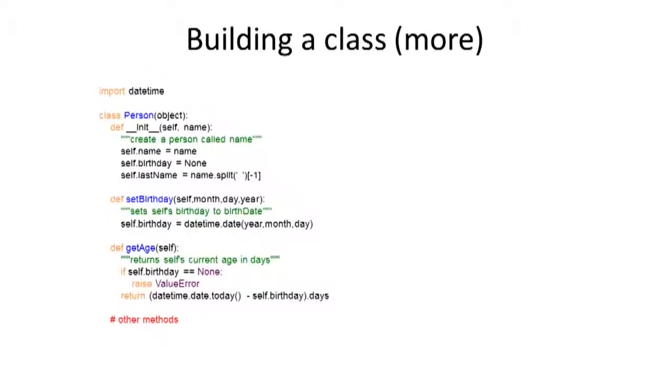Now, what else might I like inside of a class? I want to be able to set the birthday. So I'm going to take in a month, a day, and a year, and I'm going to set birthday to be a method from datetime that gets me out the date for those particular pieces. And that then lets me get the age of a person by comparing today to my birthday and returning it in days. Let's take a look at what that might do.